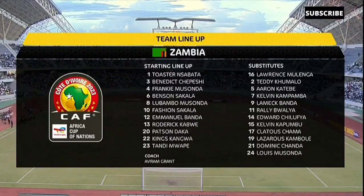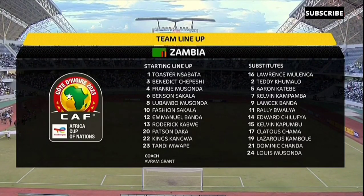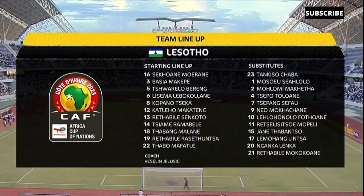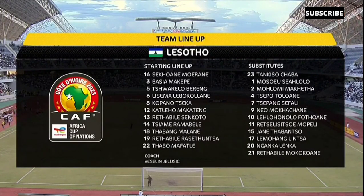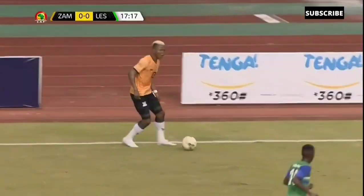Let's have a look at the starting line-up for Chipolopolo under Avraham Grant. Three changes made by the coach. Don't forget the last time we played was on the 7th of June against the Comoros with a 2-1 result. Senkoto playing on the right-hand side from Lillefane is one of the changes, and Makateng who's in South Africa with Richard's base.